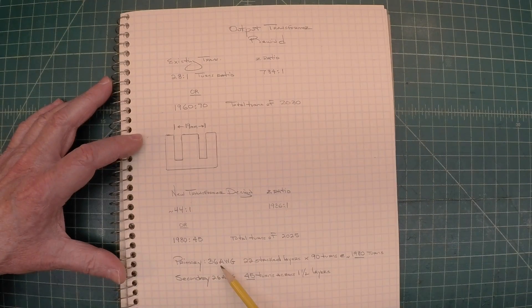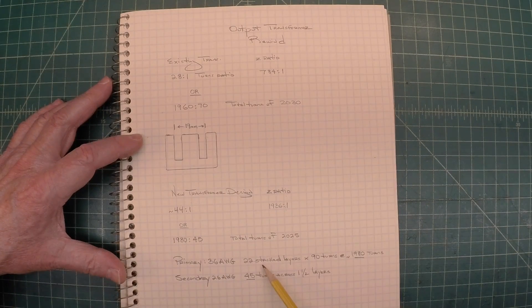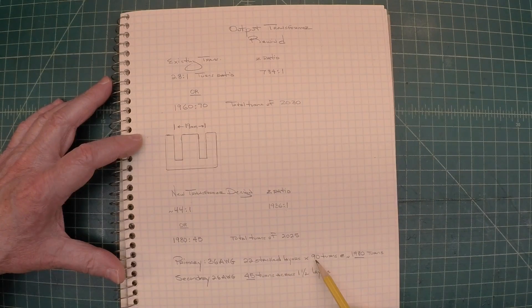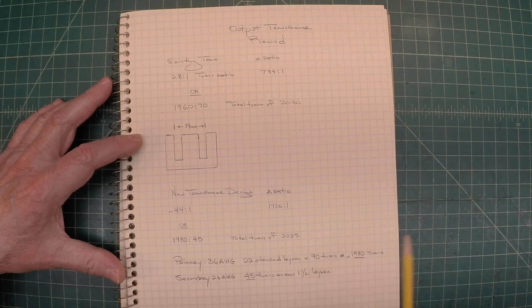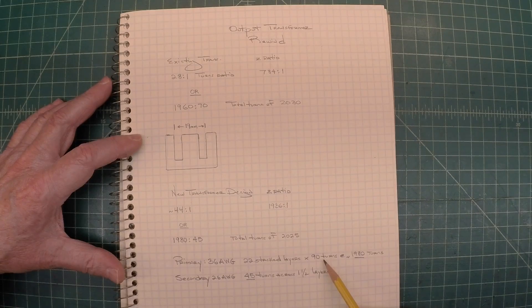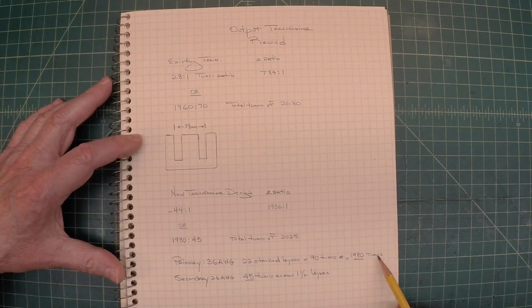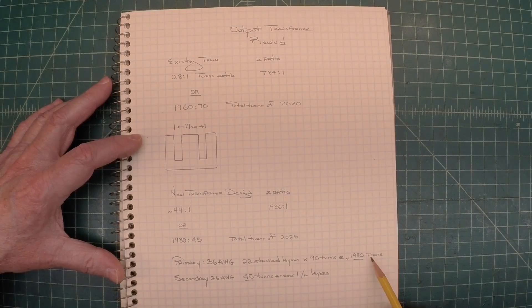The primary will be 36 AWG. There's 22 individual stack layers, 90 turns each across the coil former for a total of 1980 turns. So that's what I'll shoot for.